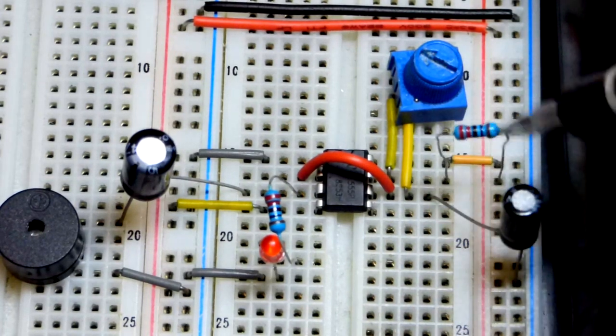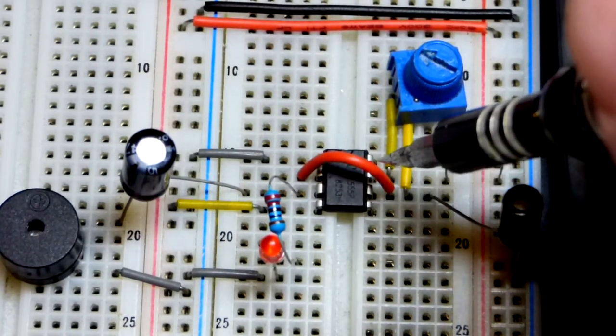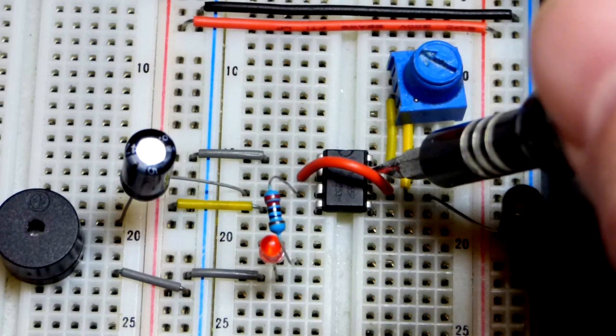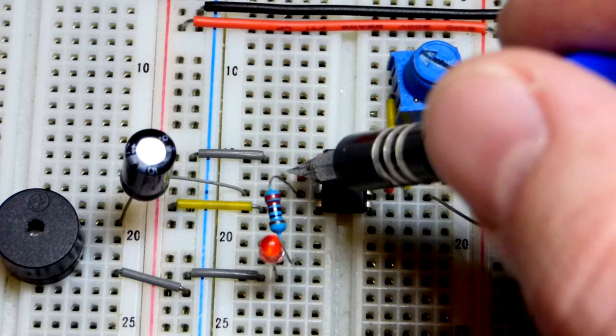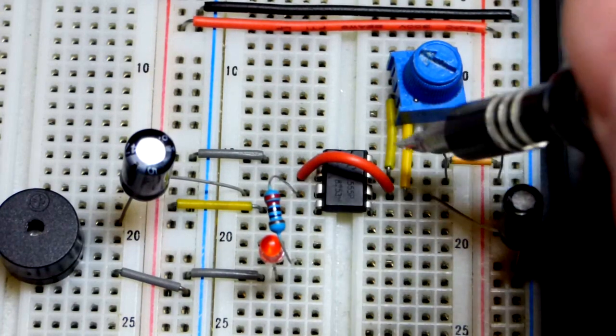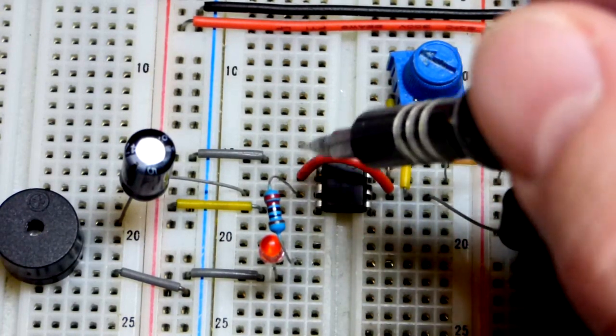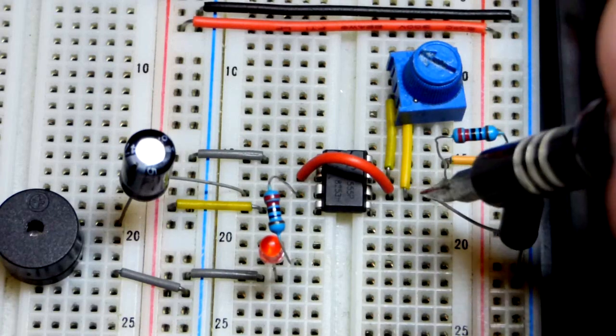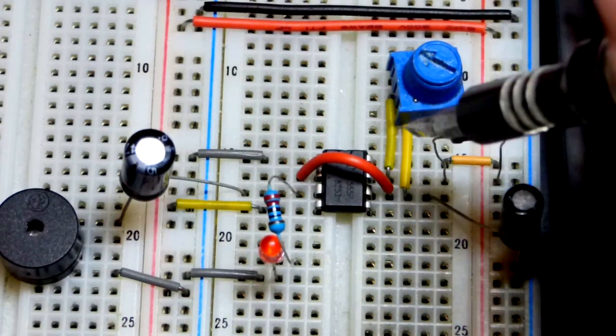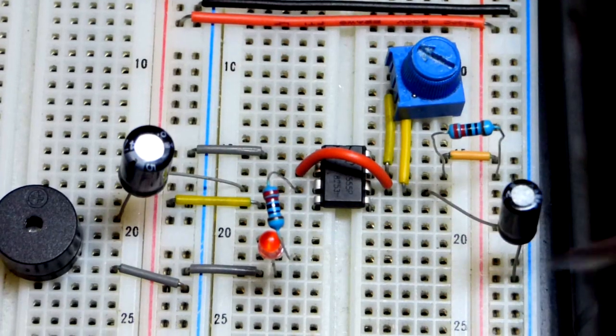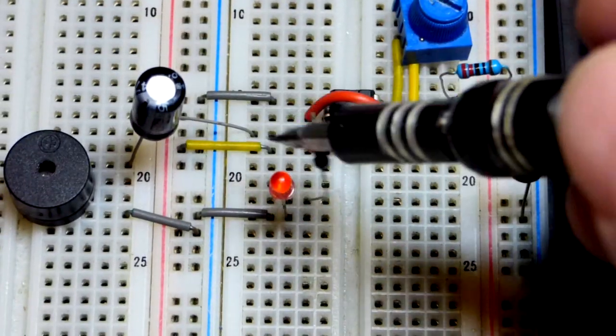When we have the output high, the capacitor charges to two-thirds, then we get the discharge there until it gets down to one-third. So discharge connects to ground till we get down to one-third. The capacitor discharges and then the output goes high again, and the capacitor starts charging. The discharge pin disconnects so that current cannot flow again for the capacitor to charge.